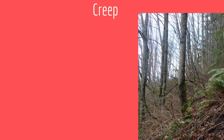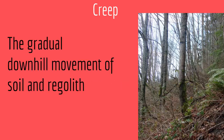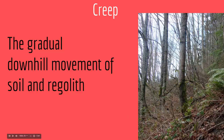Creep is the gradual downhill movement of soil and regolith. As you can see in this picture, the slow movement is apparent on the trees — they are somewhat concave in the direction of movement, which is a result of creep. The soil and materials are slowly coming down the slope, bringing everything with them. The movement is not visible to the naked eye because it is very slow — it's a gradual downhill movement of soil and regolith.